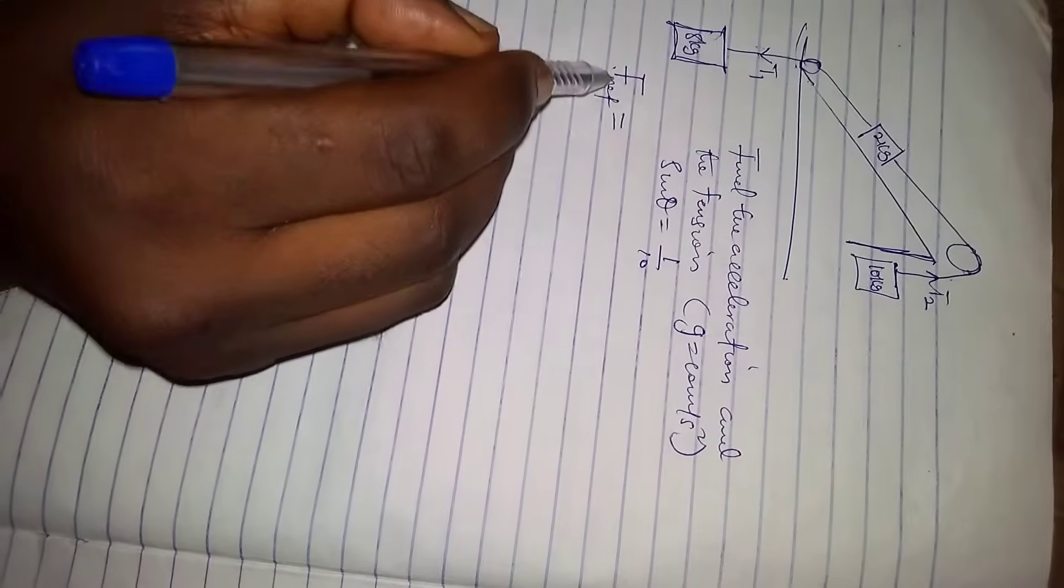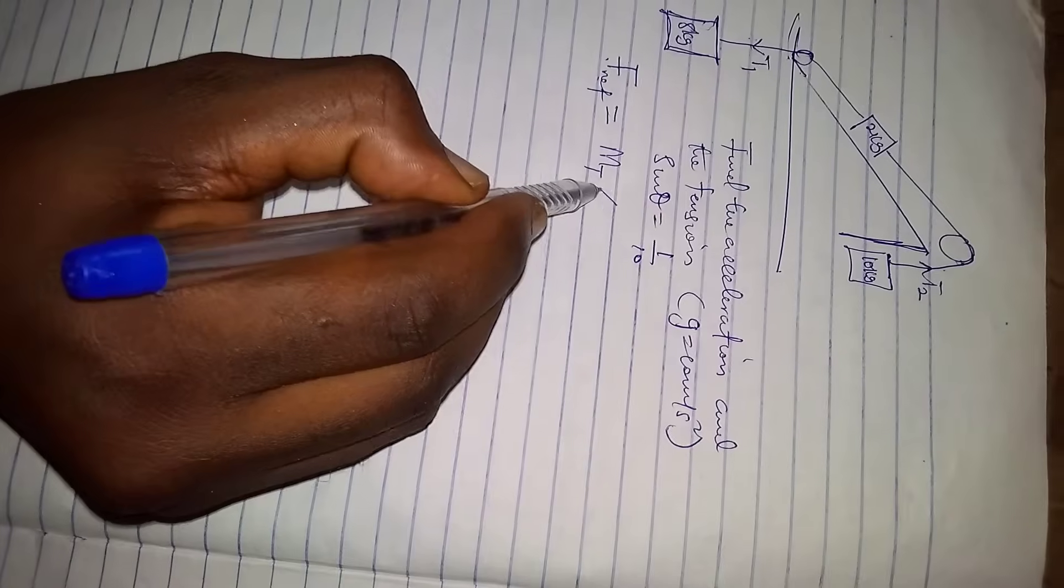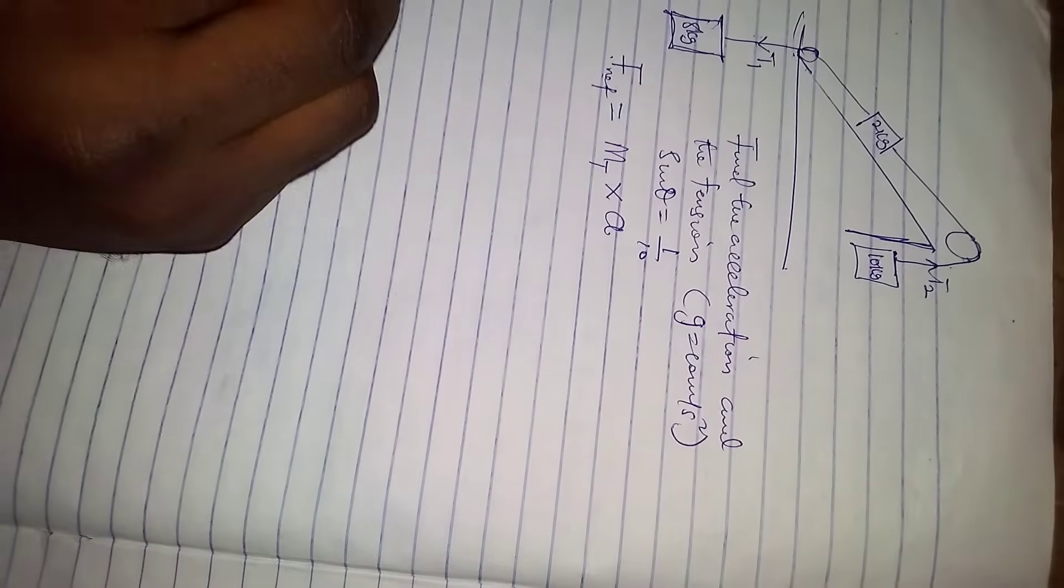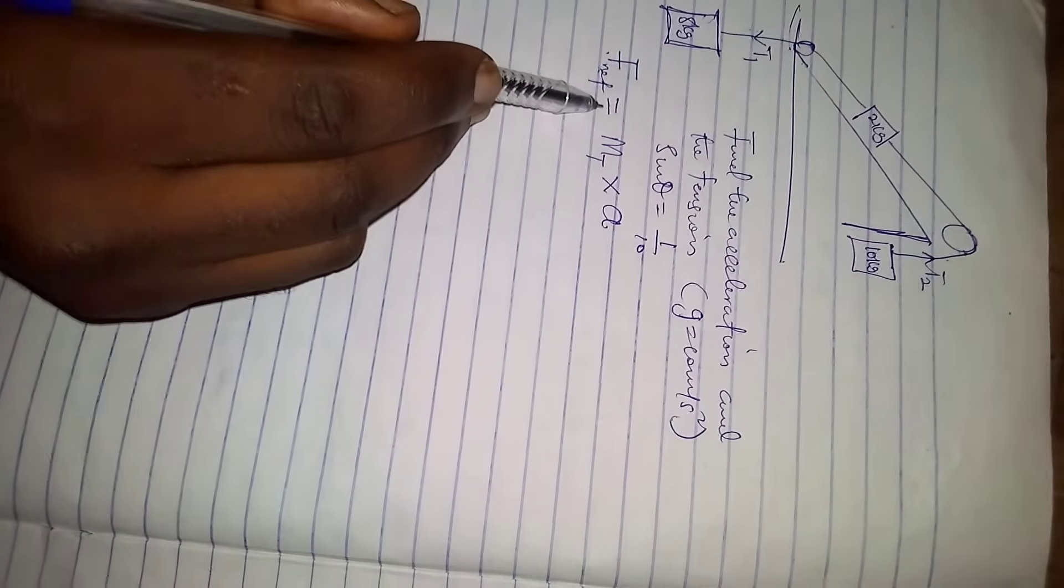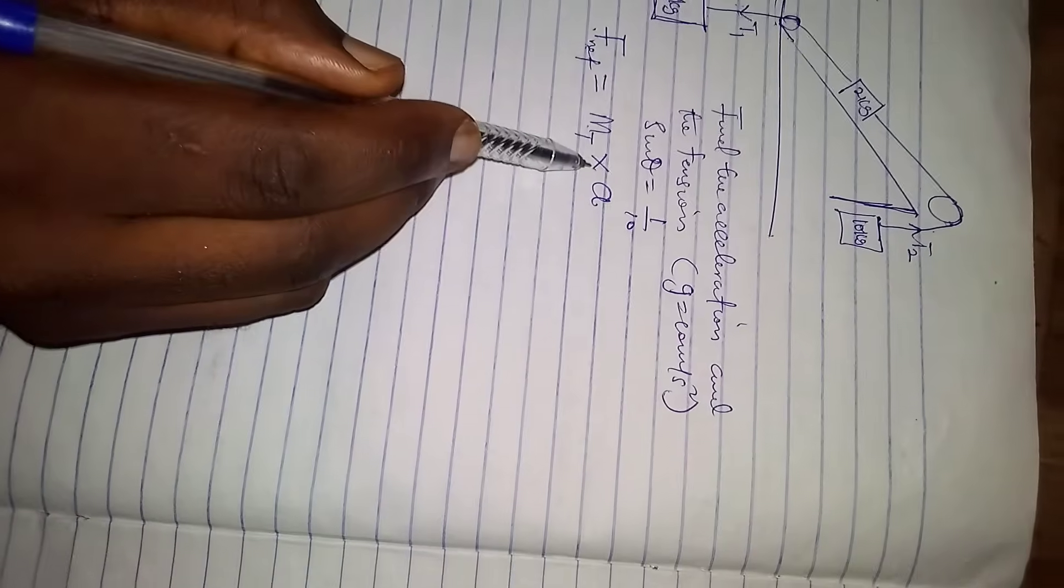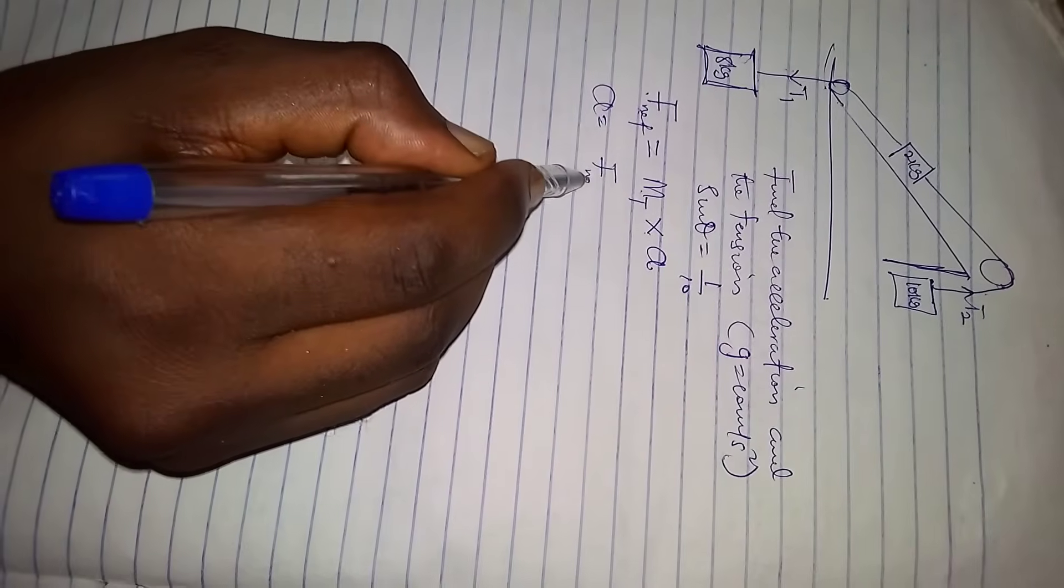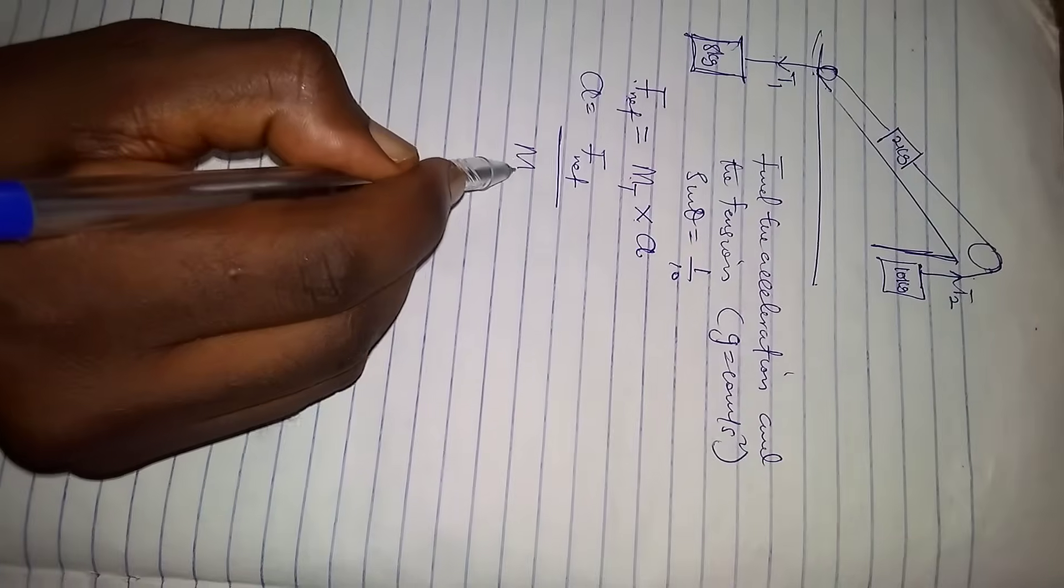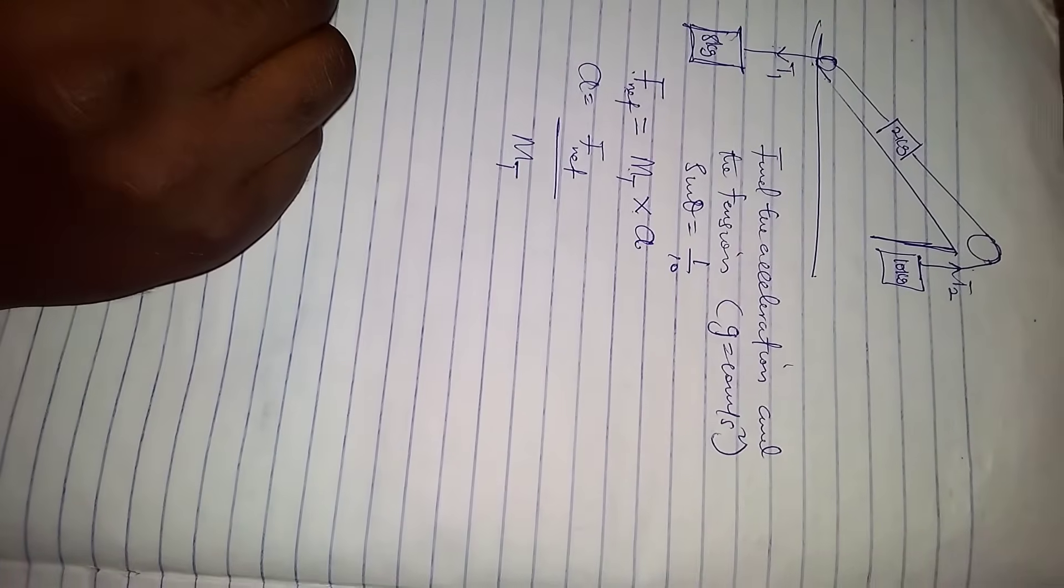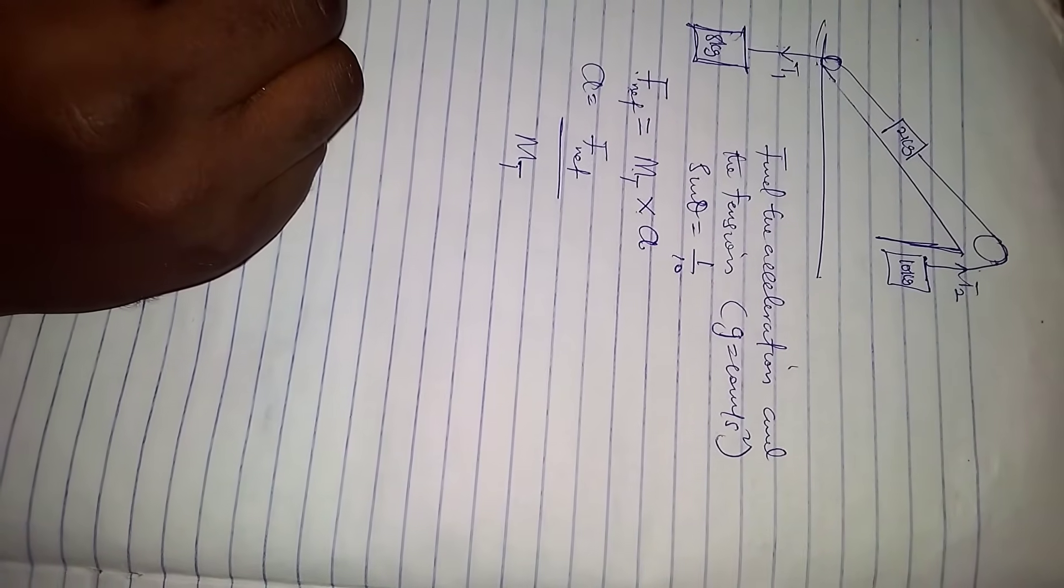So to find our acceleration, as I've mentioned before, we are going to use the formula that says F net, that is net force, equals total mass times acceleration. The acceleration will be equal to net force over total mass.